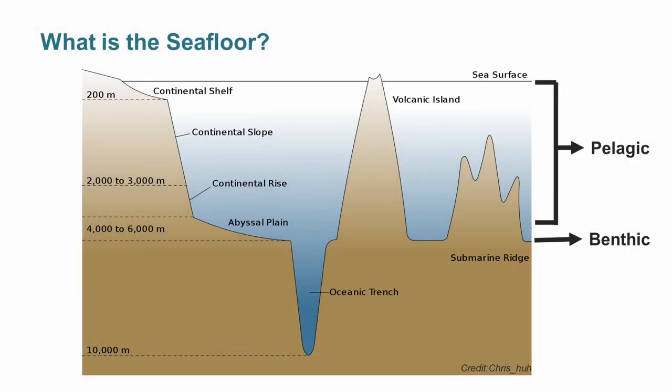We have abyssal plains, which are quite flat, that go down into oceanic trenches which can be up to 12 kilometers deep. And then we have seamounts and volcanic islands that can actually almost hit the surface. Most of us are familiar with the intertidal or beach zone or the subtidal, which is quite shallow. But our seafloor extends all the way out to all parts of Australia — and indeed the world — that are not above sea level on land.